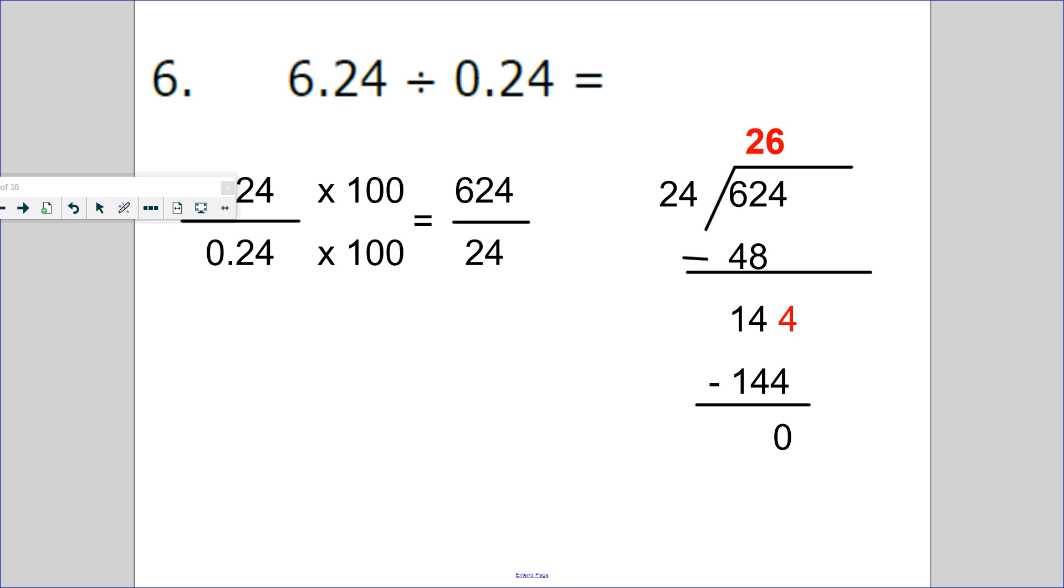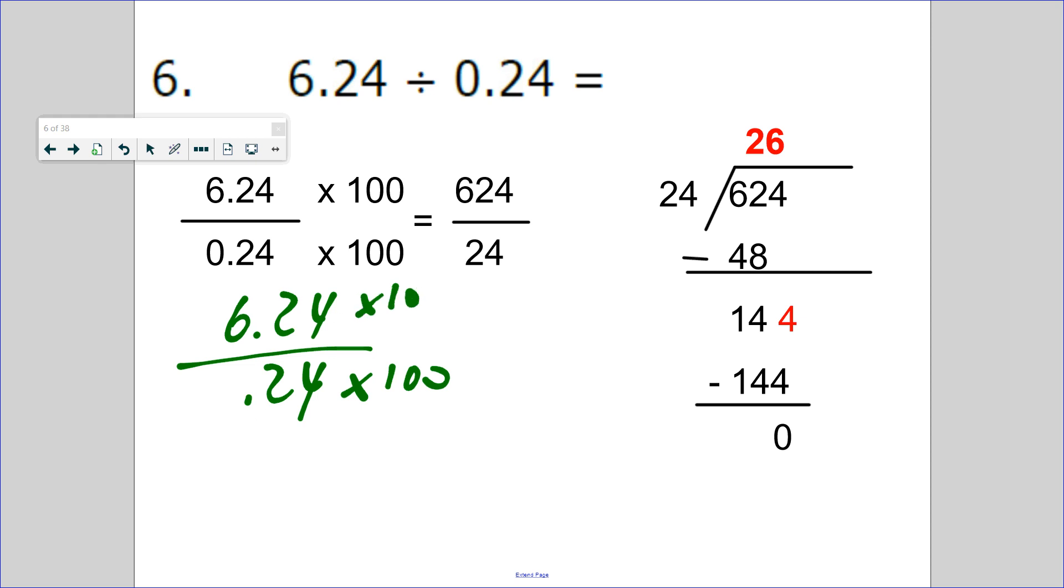Now, division. It's 6.24 divided by 0.24. I don't like dividing by decimals, so I'm going to turn these to whole numbers. What place value is that? Hundredths. So if I multiply by 100, that's 624. If I multiply by 100, that's 24.